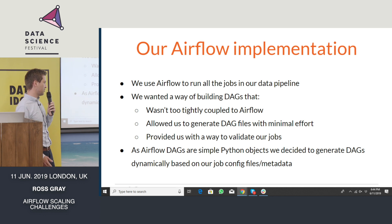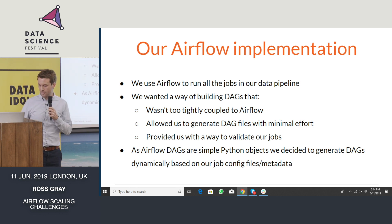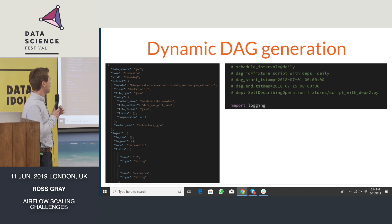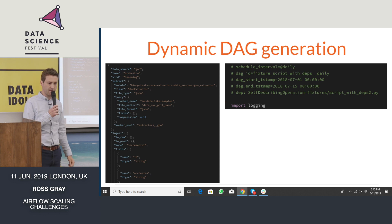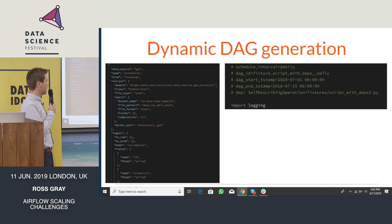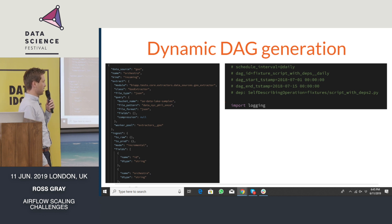Since Airflow DAGs are just simple Python objects, we thought an elegant way of generating these files would be based on some config or metadata that we have. Here are a couple of examples: on the left, we have a JSON config file which represents a common task in our data pipeline. And on the right, we have an example of a script where we have some metadata at the top of the file, which our DAG builder can use to generate a DAG file from.